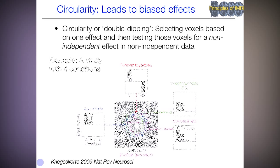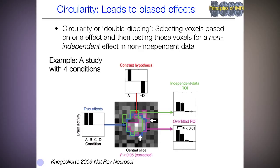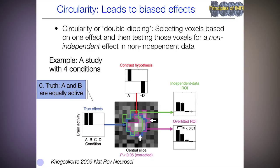This is pernicious, and we have to think through our results and analyses carefully to avoid it. Here's a worked-through example. We have a panel of voxels in a study with four conditions: A, B, C, and D. The true effect is that A and B activate, C and D don't. We select data based on the contrast A versus D, picking out voxels that show this effect. Any voxels tested later will tend to show noise that favors A versus D.